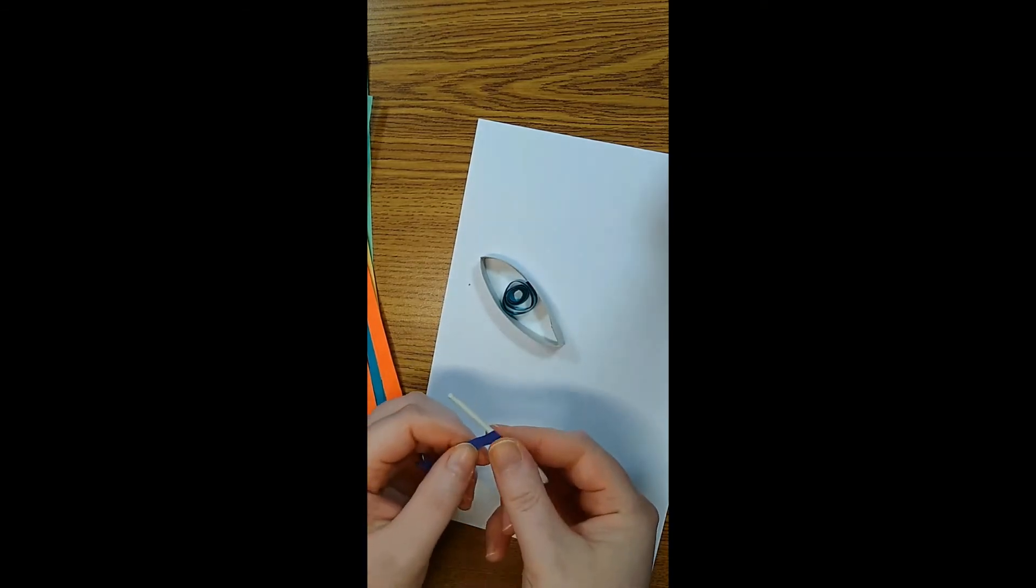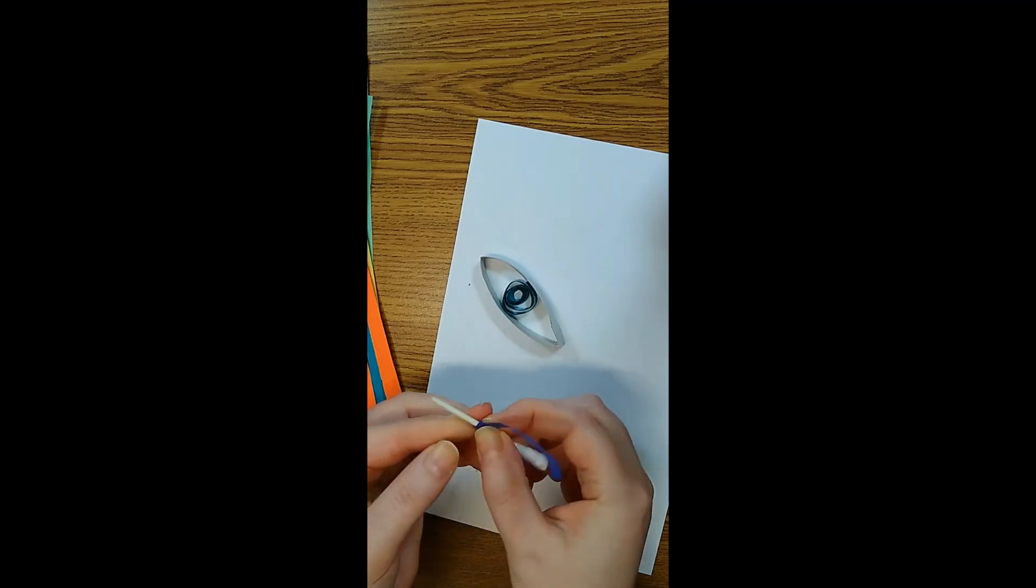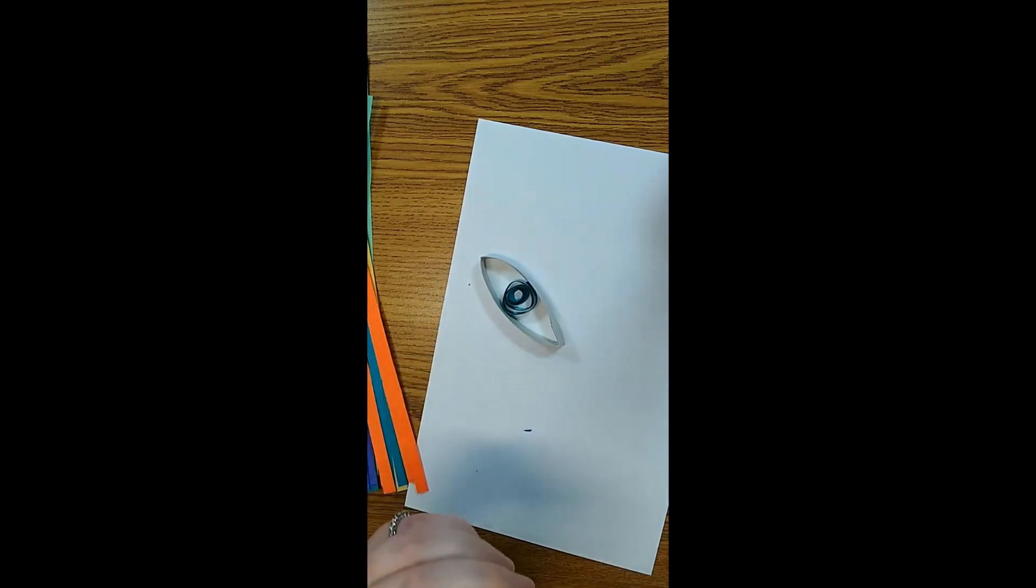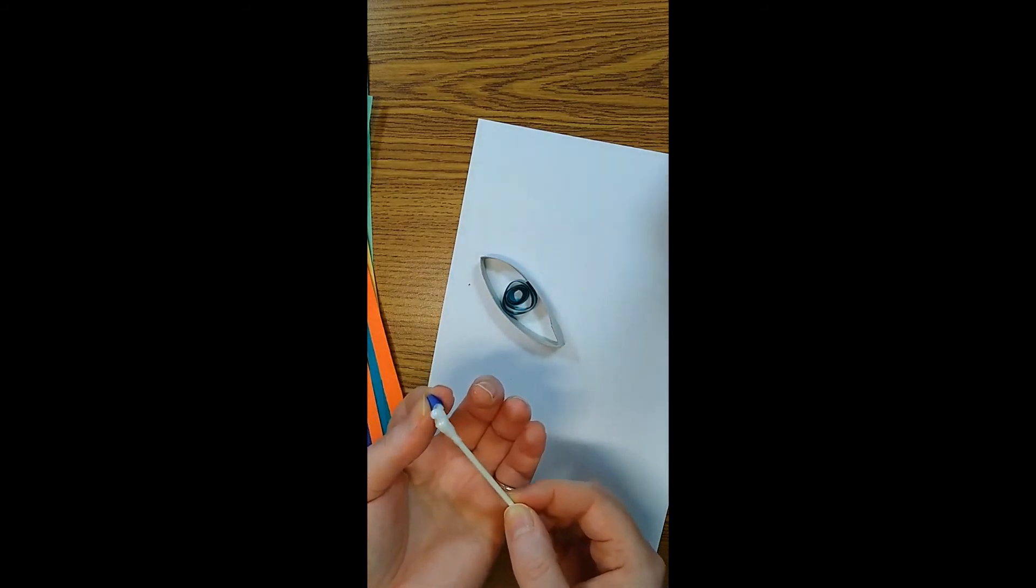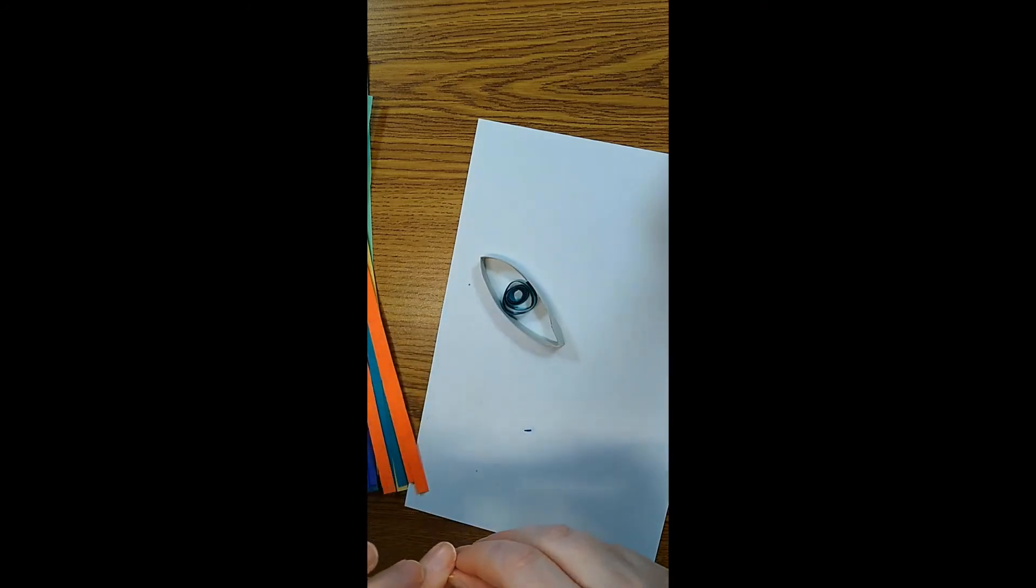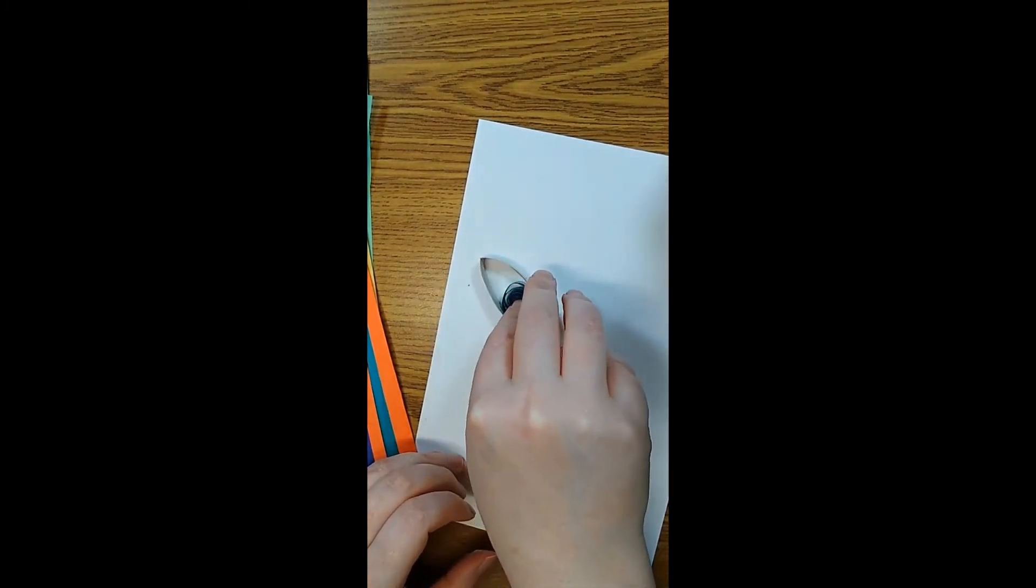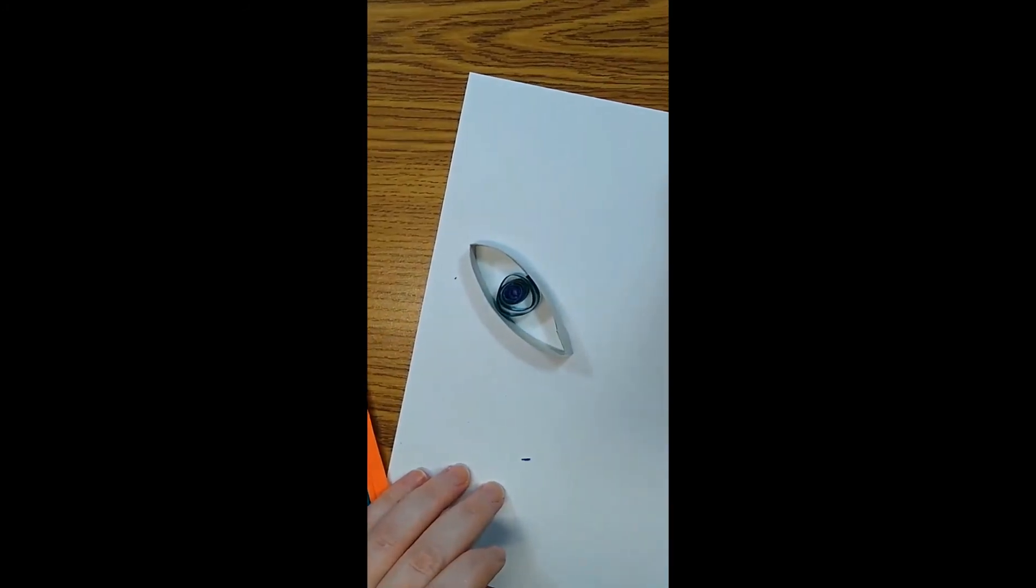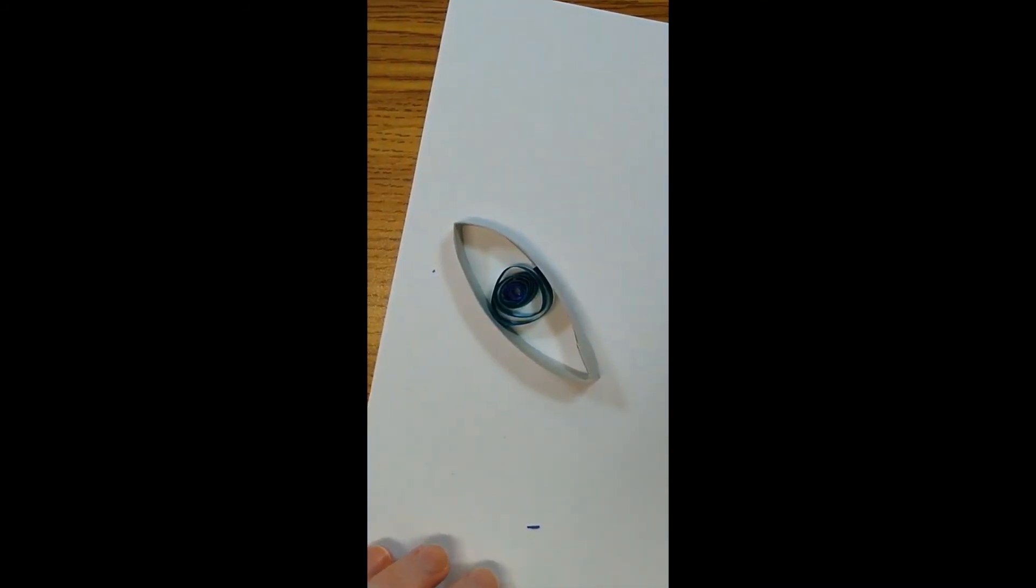So we're going to use the cotton swab again, we're going to add the glue, and I'm going to pop it in the center of the last roll that I did.